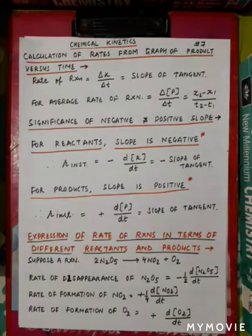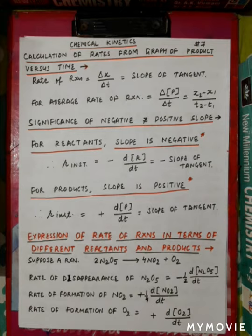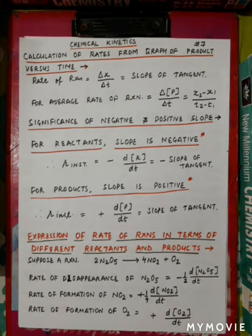Good morning dear students. Last video we started with a chapter called Chemical Kinetics, one of the most important chapters of Physical Chemistry. In that lecture we talked about molar concentration of reactant and product, the definition - which is a branch of chemistry dealing with the speed of reaction, the mechanism, and which factors affect them. We also calculated the instantaneous rate of reaction and average rate of reaction with a graphical representation.